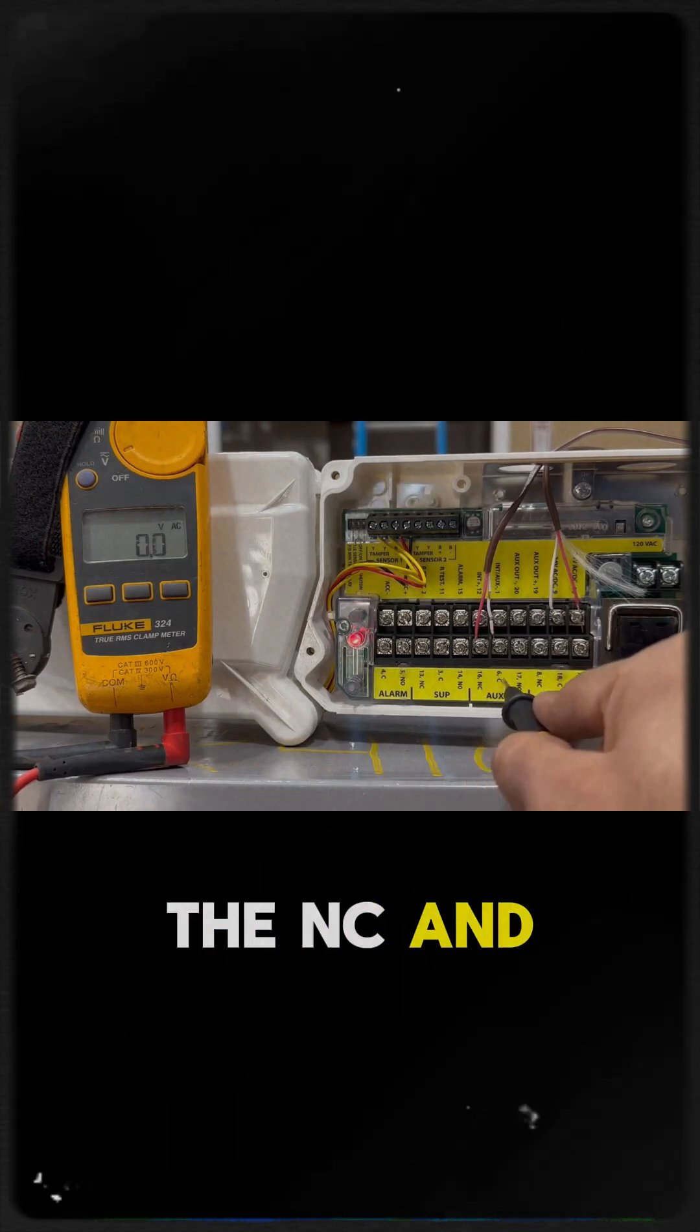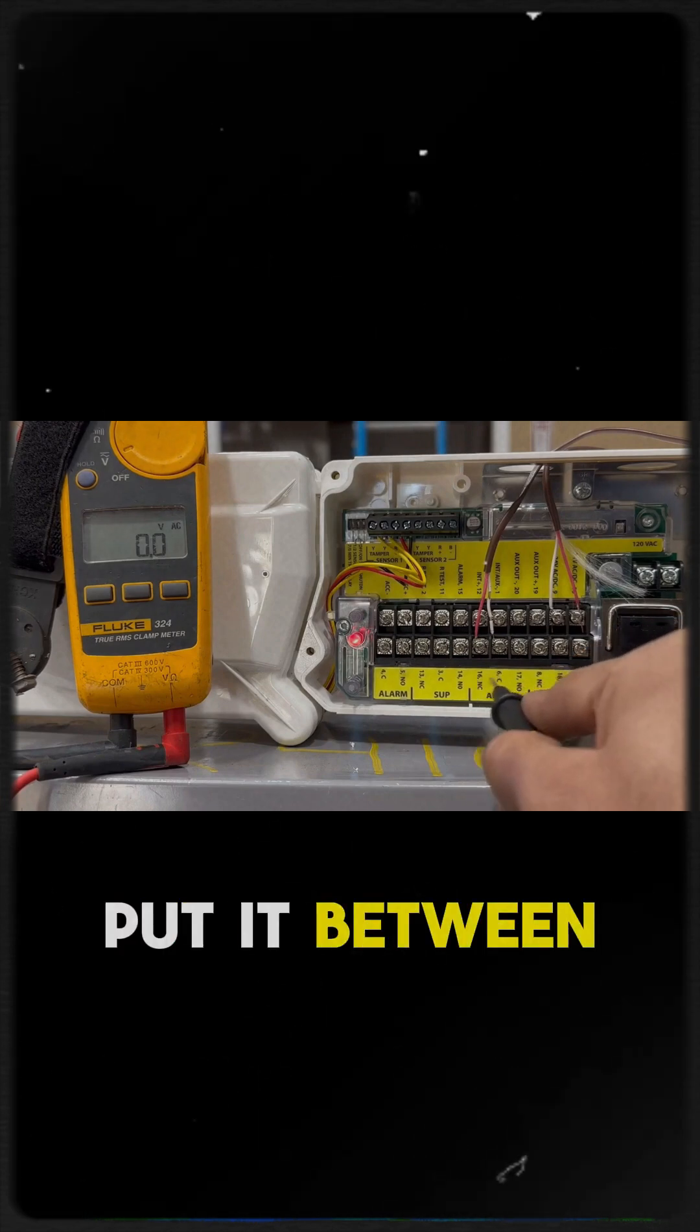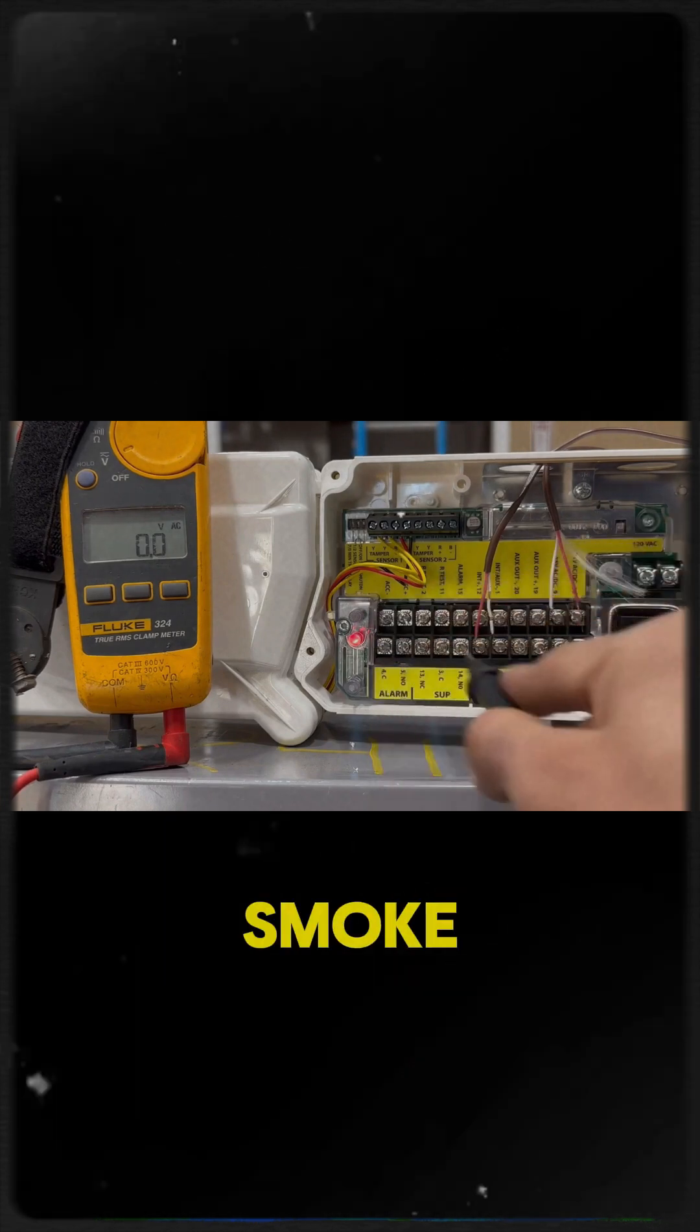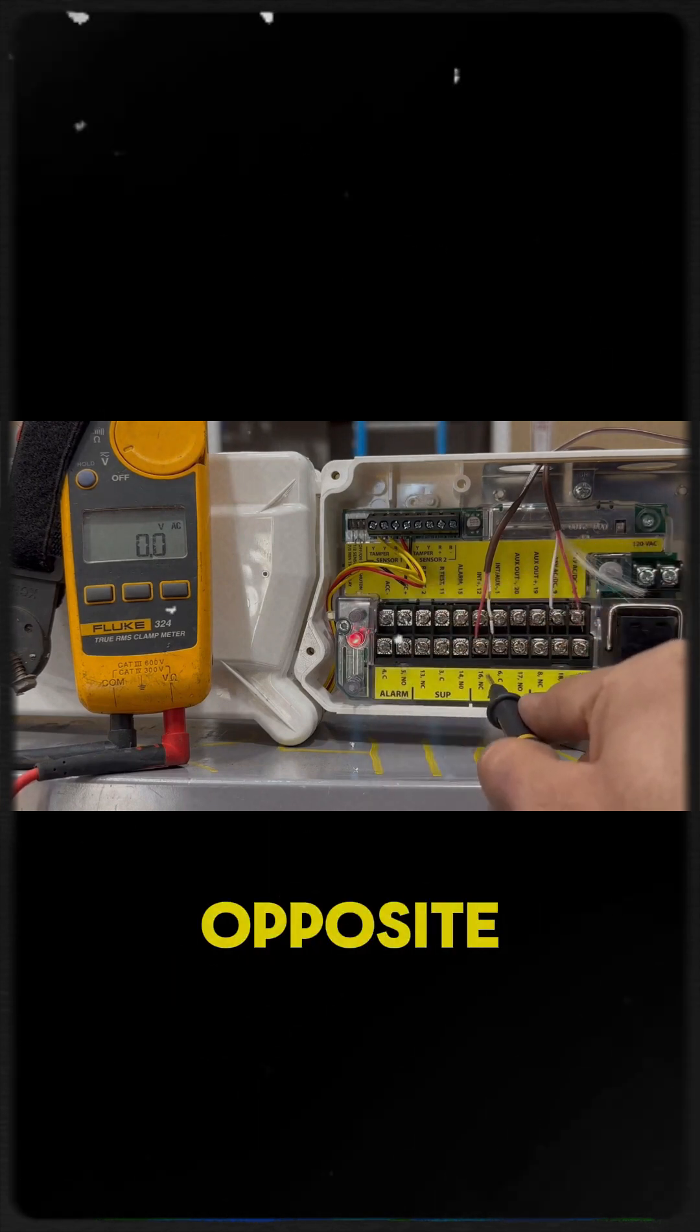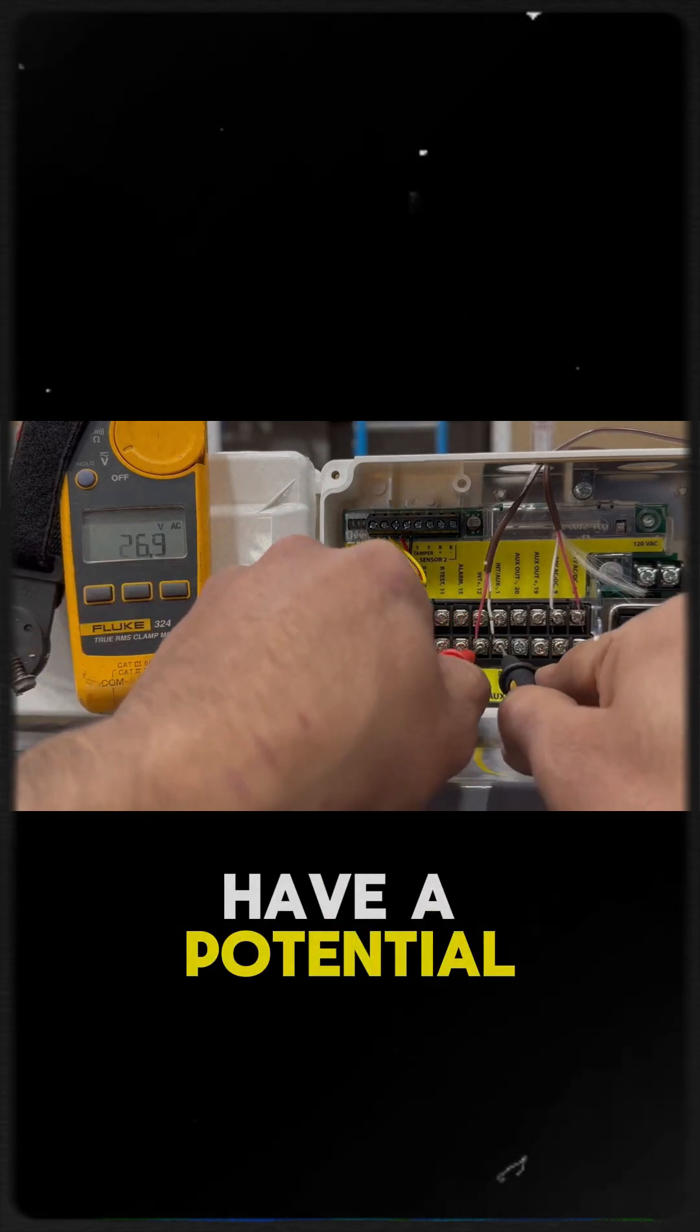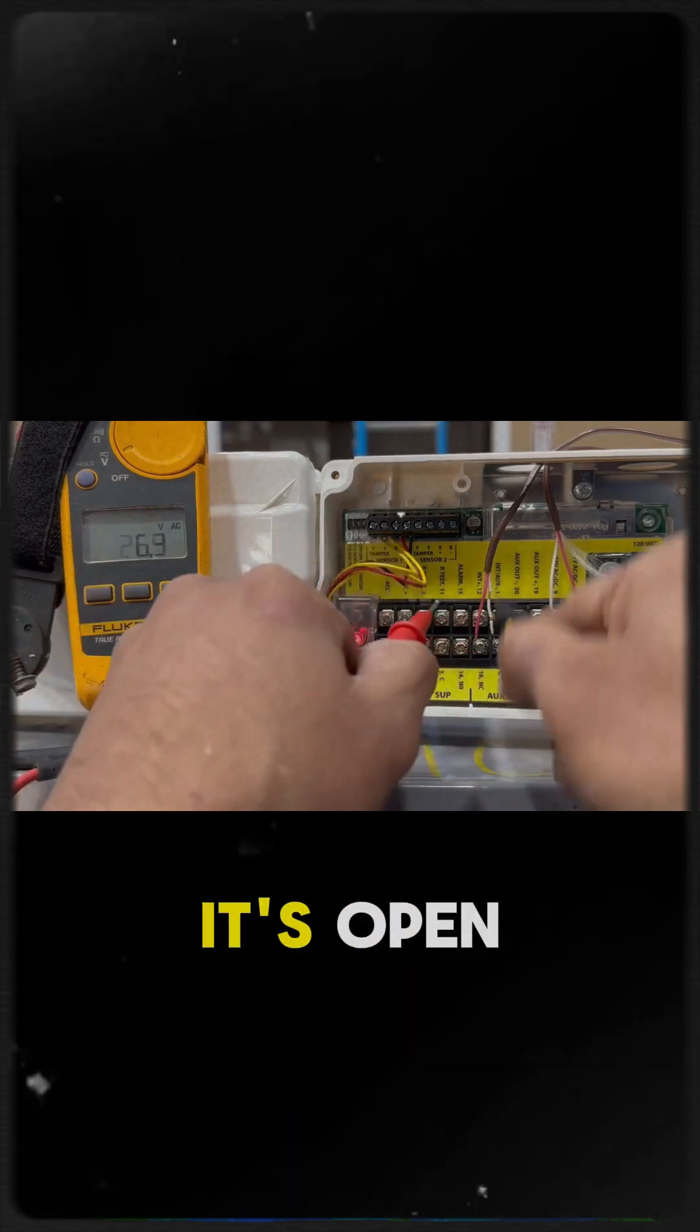You want to put it between these two because when it senses smoke it does the opposite. It opens. So now I have a potential, you see I got 26 volts, it's open.